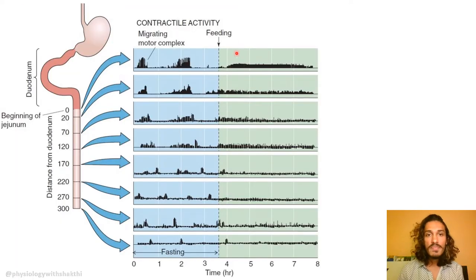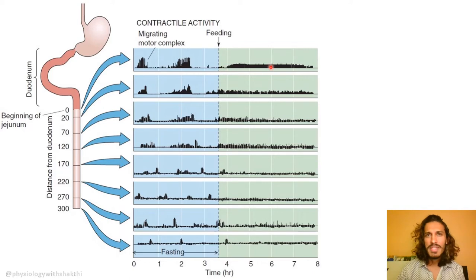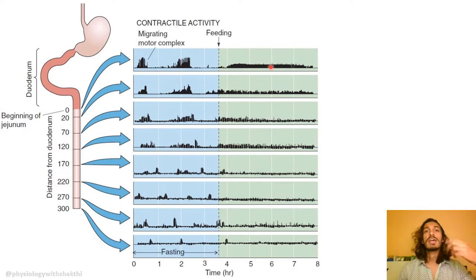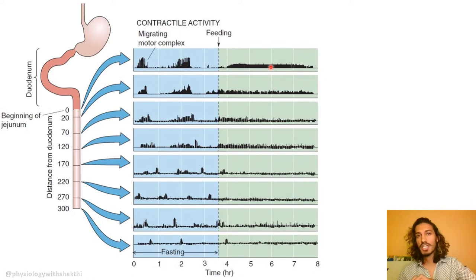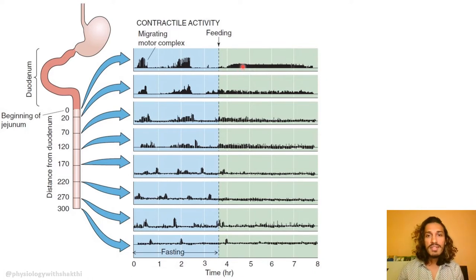After feeding, you can see the pattern which is the basal electrical rhythm — slow wave and spike potential — that results in peristalsis and segmentation. That is the activity seen in the fed state.